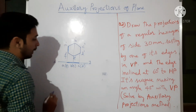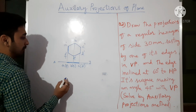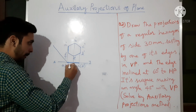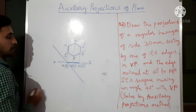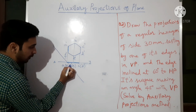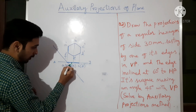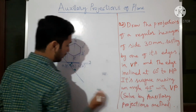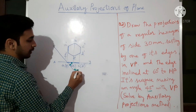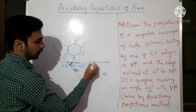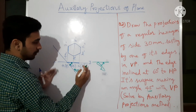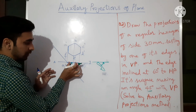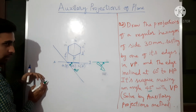I am taking a new XY line somewhere here — you can place it anywhere. Instead of rotating the hexagon by 45 degrees, I have rotated the XY line to 45 degrees. So the new XY line is at 45 degrees, and the front view will come here.